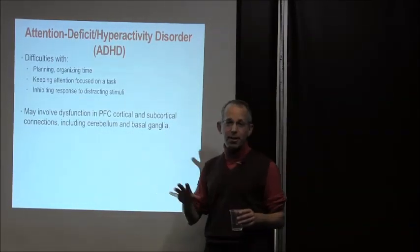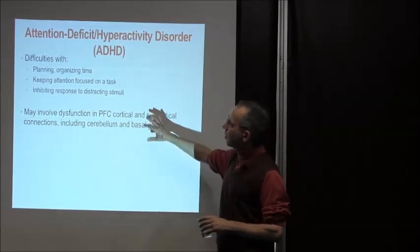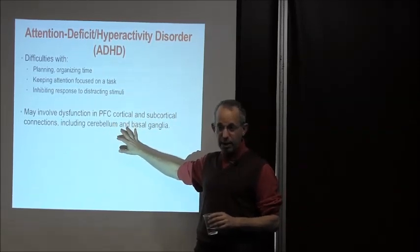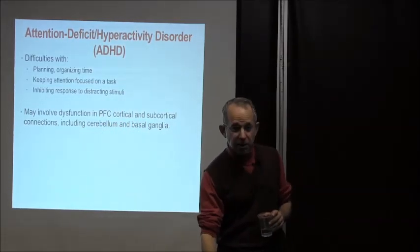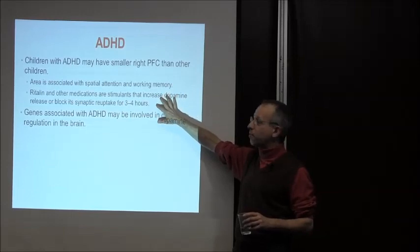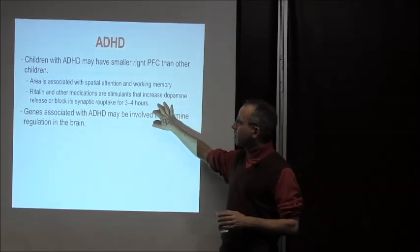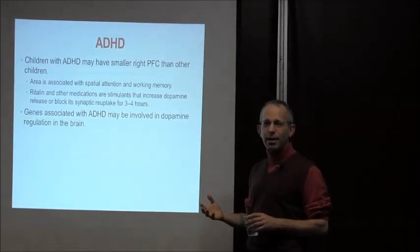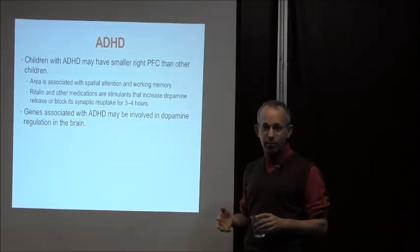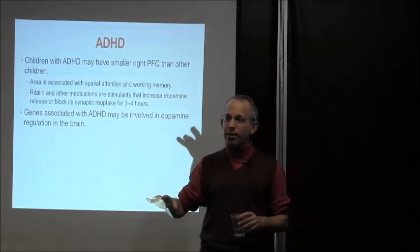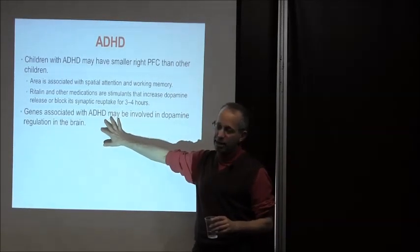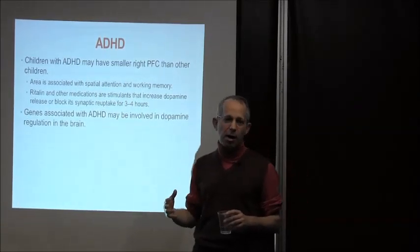Attention deficit hyperactivity disorder involves difficulties with planning, organizing, and maintaining attention — similar frontal-lobe-related deficits. It may involve dysfunction in the prefrontal cortex as well as connections with the cerebellum and basal ganglia. Children with ADHD have a smaller right prefrontal cortex, an area associated with spatial attention and working memory. Medications like Ritalin are stimulants that increase dopamine or block its uptake — unlike schizophrenia where you reduce dopamine, for ADHD you boost it. This illustrates that with dopamine, more is not always better; there's an optimal level, and too little or too much causes dysfunction. Genes associated with ADHD are involved with dopamine regulation, consistent with this dopaminergic account.